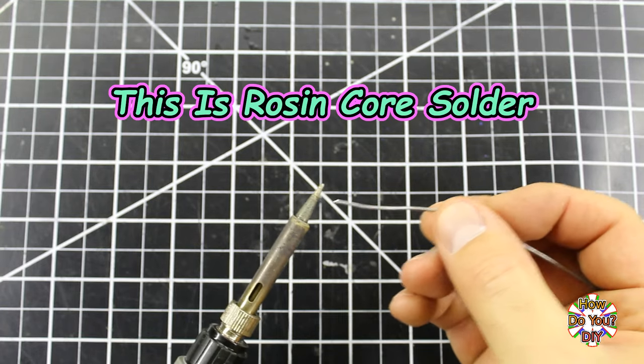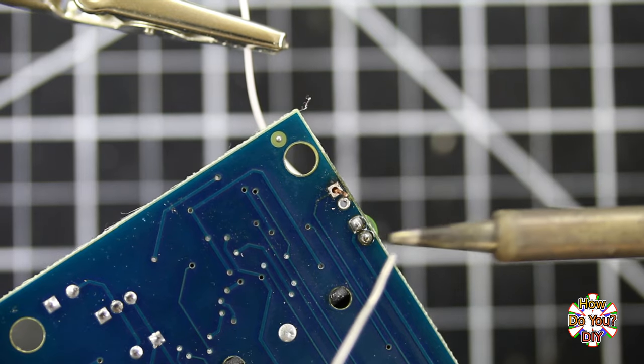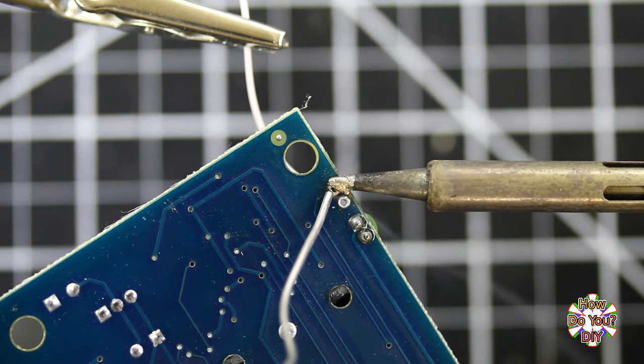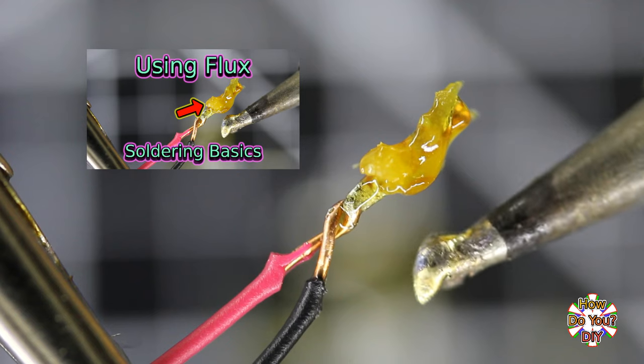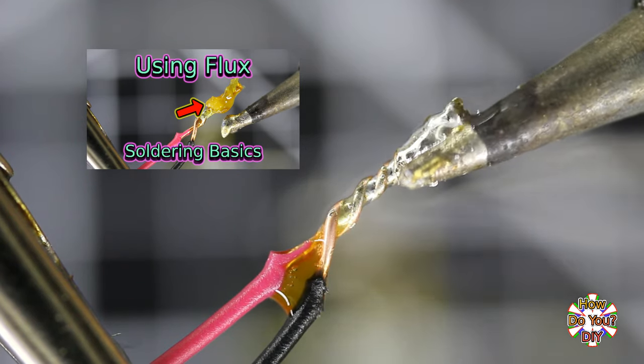Also keep in mind that the soldering iron will burn the flux out of the solder over time. The technique that I show in my using solder video will minimize the amount of flux being burned away. I also recommend watching my video about using flux because it explains why flux is so important.